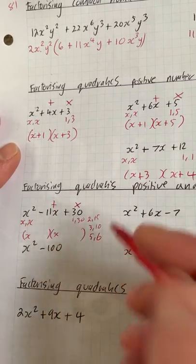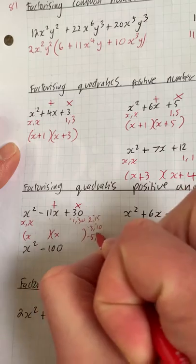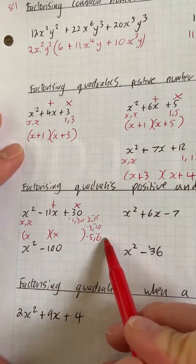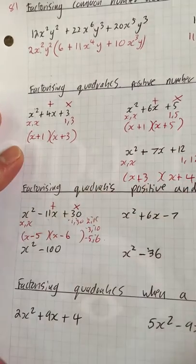Now because this is minus 11, all of these numbers would have to be negative, and we're looking for one that adds to make minus 11. So minus 5 take away 6 gives you minus 11. So in one bracket we've got minus 5, in the other bracket we've got minus 6.